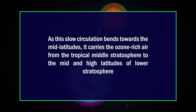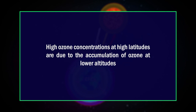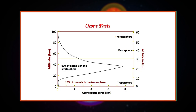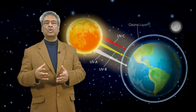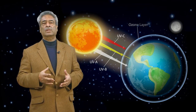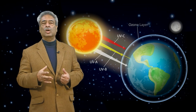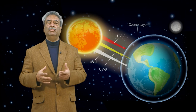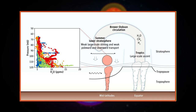As this slow circulation bends towards the mid-latitudes, it carries ozone-rich air from the tropical middle stratosphere to the mid and high latitudes of the lower stratosphere. The high ozone concentrations at high latitudes are due to the accumulation of ozone at lower altitudes. The time needed to lift an air parcel from the tropical tropopause near 16 to 20 kilometers is about 4 to 5 months. This pattern is explained by the prevailing stratospheric wind patterns known as the Brewer-Dobson circulation.